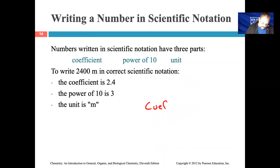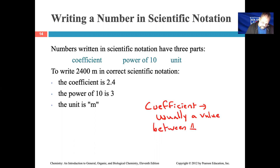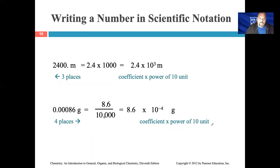When we talk about a coefficient, that's usually a value between one and ten. It doesn't have to be, but more often than not when you look at numbers in scientific notation, the coefficient is between one and ten. So to write the number 2400 meters in scientific notation, the coefficient is 2.4, the power of 10 is three or plus three, and the unit is the meter. Let's take a look at how we come up with these different parts.